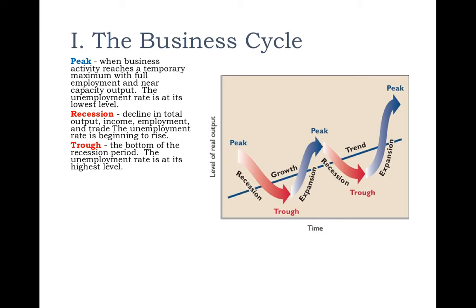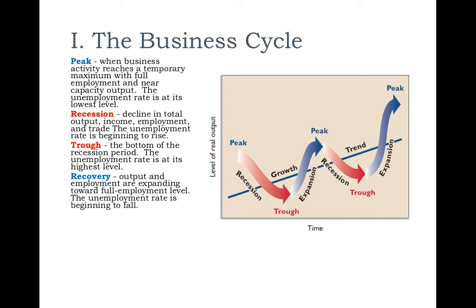The next phase is the trough — the antithesis to the peak. The peak is the high point; the trough is the lowest point, where unemployment is high and businesses are doing the worst. Coming out of the trough, we enter a recovery or expansionary period, where employment and output start increasing. Importantly, all of this occurs as GDP is generally increasing over time — even during a recession, the overall long-run GDP trend is rising.